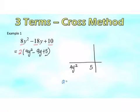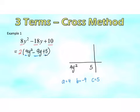We know that A is equal to 4, B is equal to negative 9, and C is equal to positive 5. Using our calculator — for those using Casio, it is mode 3-3; for Sharp and other calculators, you need to check — key in A as 4, B as negative 9, and C as 5. After pressing equal,